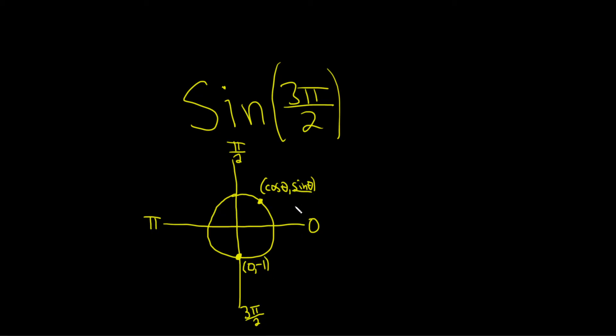But on the unit circle sine is the y coordinate so the sine of 3 pi over 2 should be equal to negative 1.